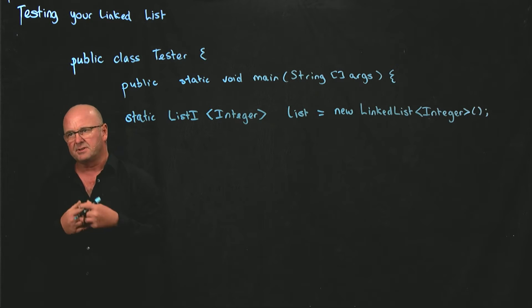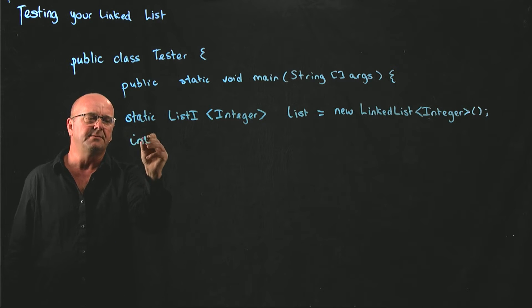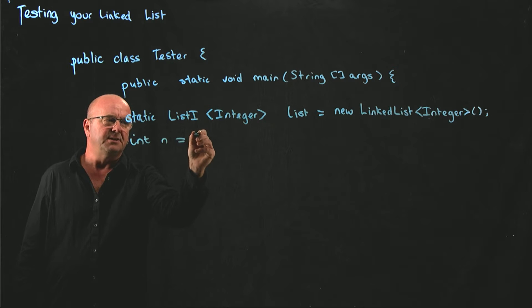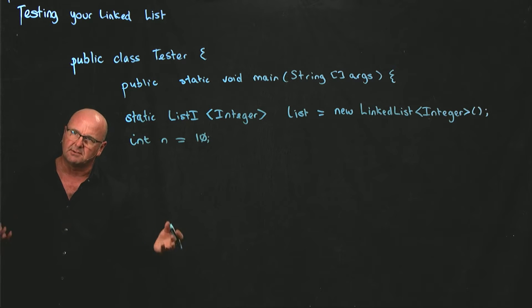What we probably want to do is start with a small number. Once we've tested it with a small number, maybe we want to test our linked list with a larger number. So if we create a variable, let's say n, which initially we'll set to ten. But once we're happy with ten, we might try a thousand just to see what happens.